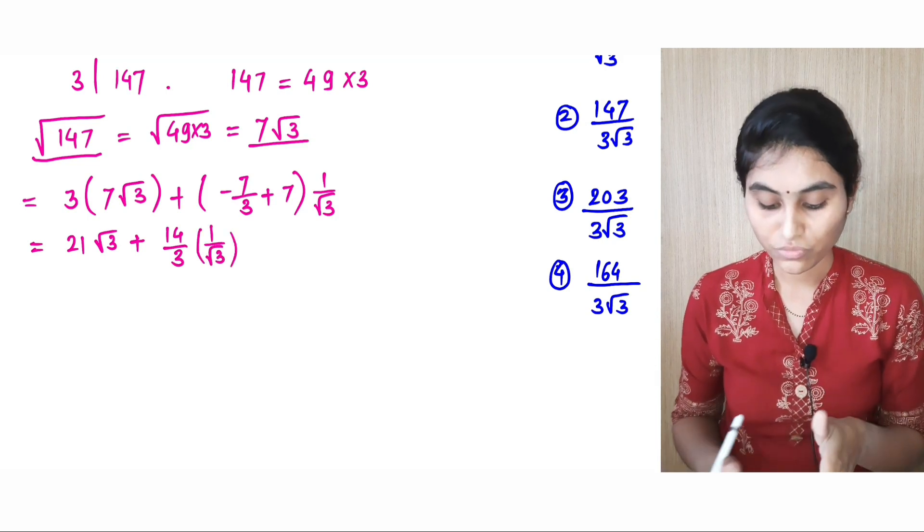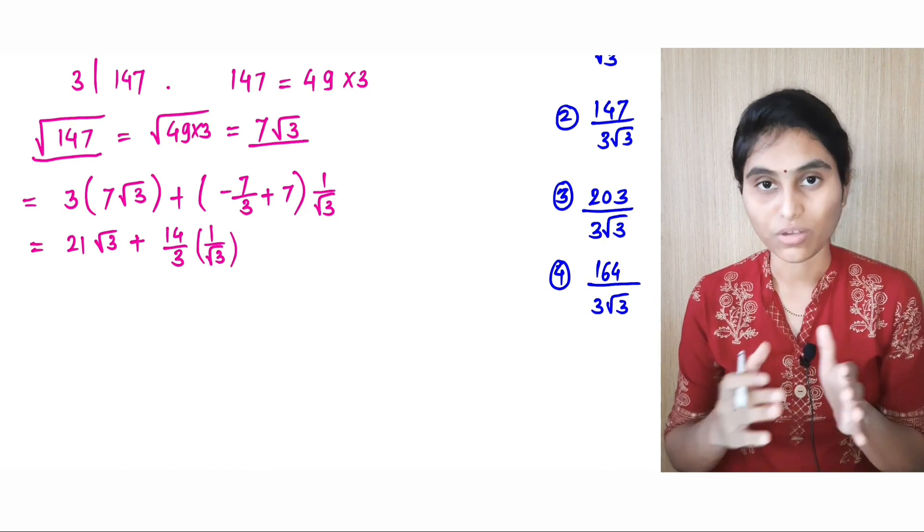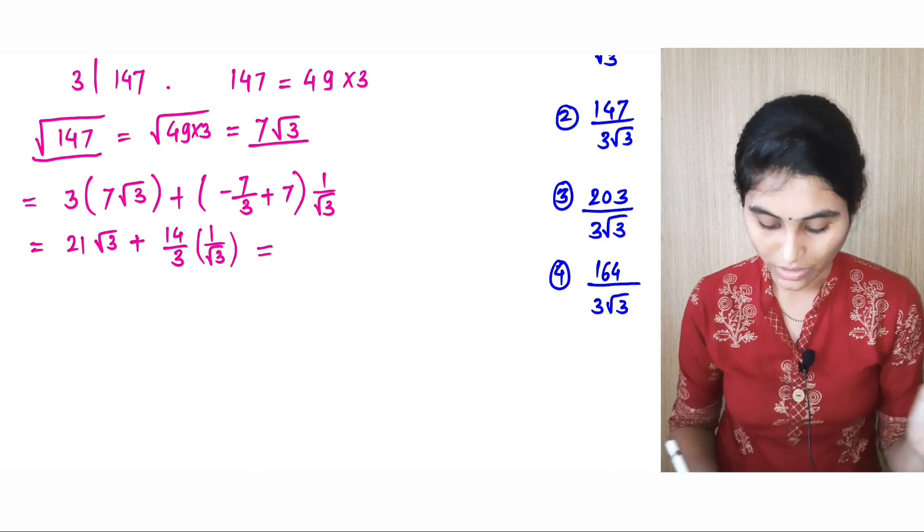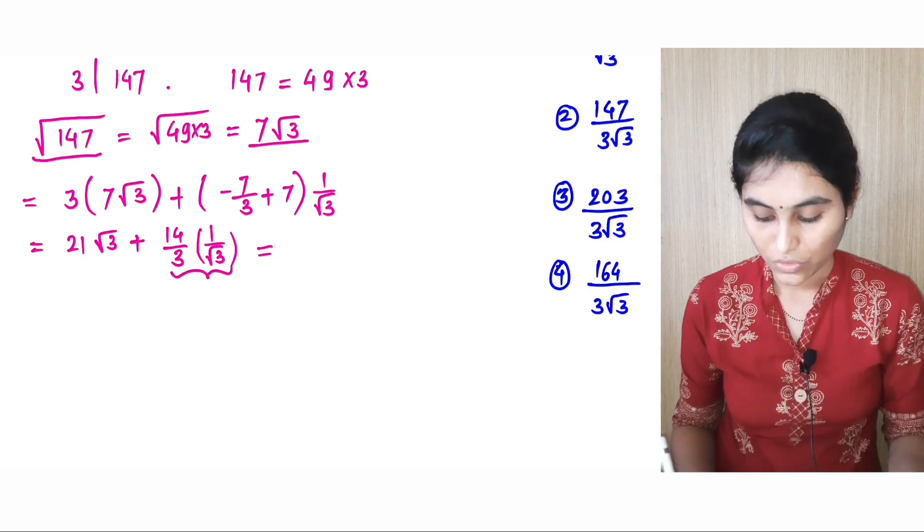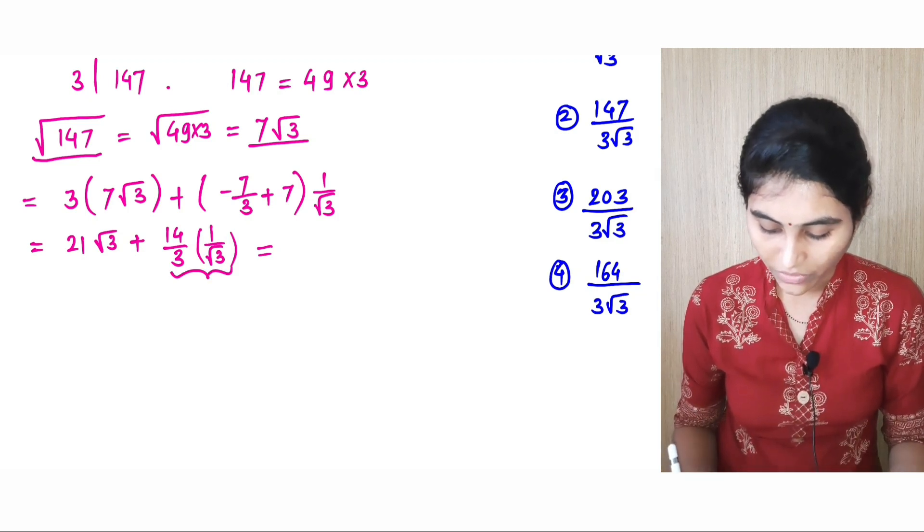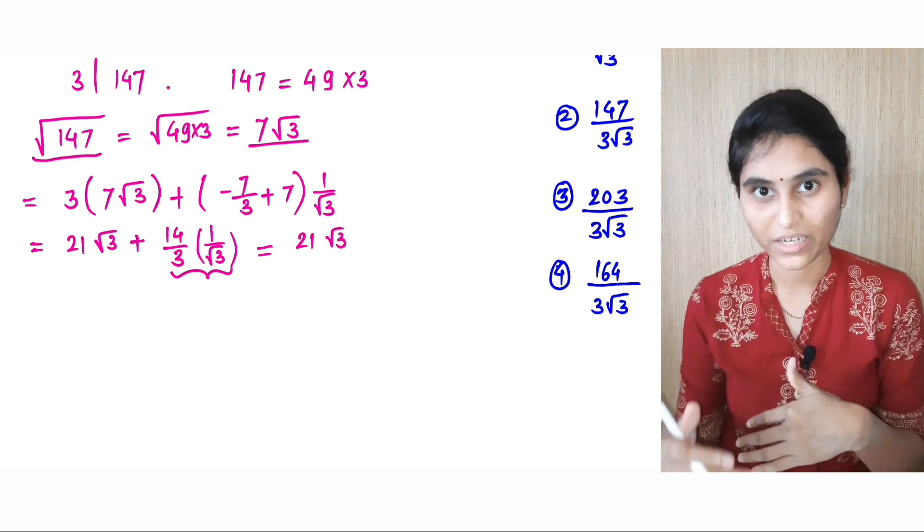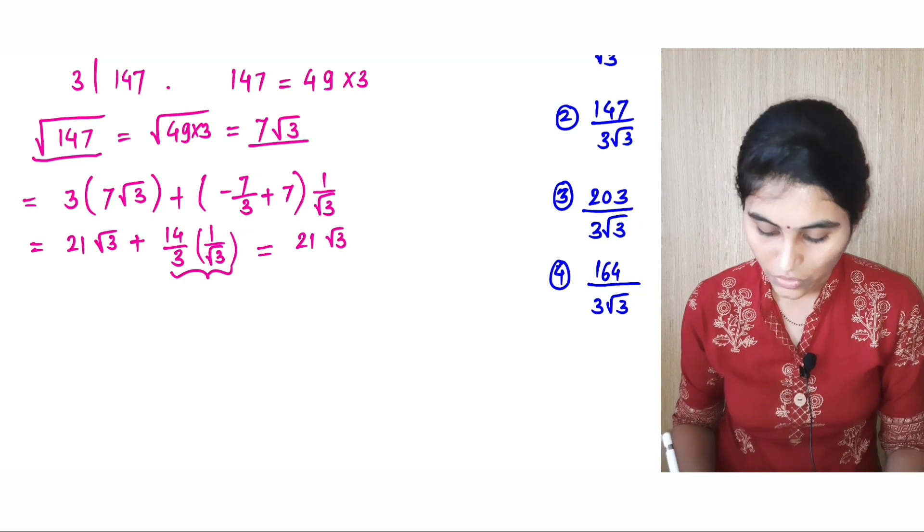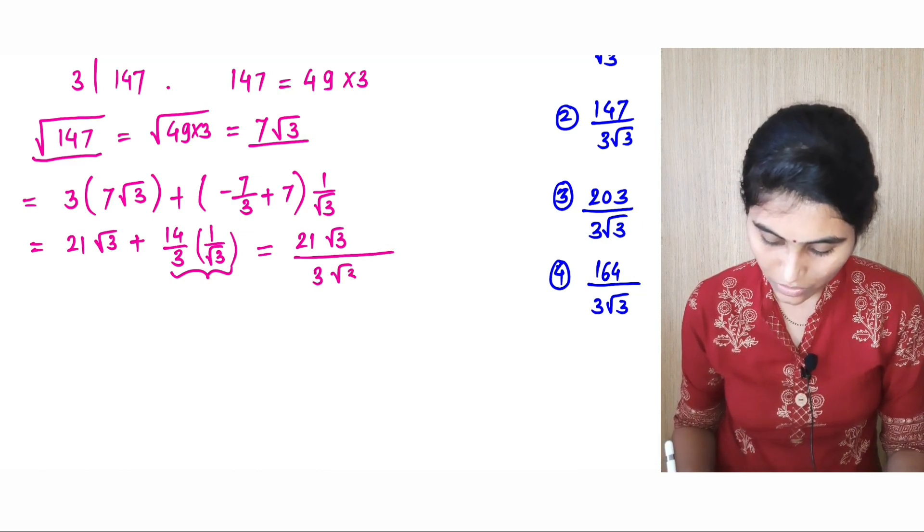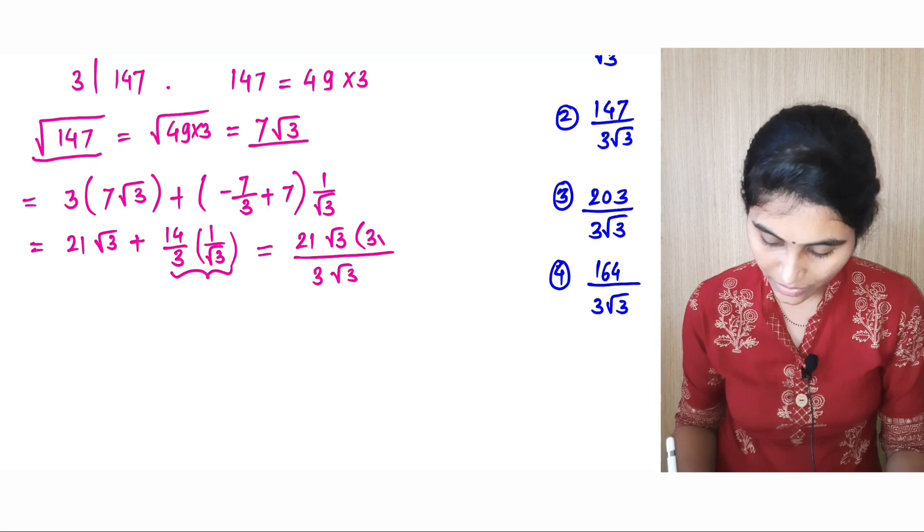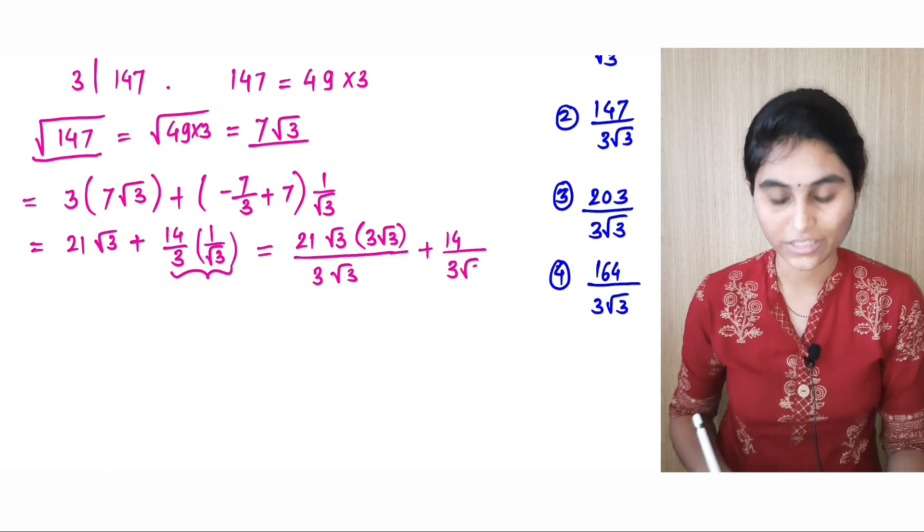Now we just have to simplify this again. Just take the cross multiplication. In the denominator we have 3 times root 3. For 21 times root 3, multiply and divide by 3 times root 3, and this 14 by 3 times root 3 as it is.